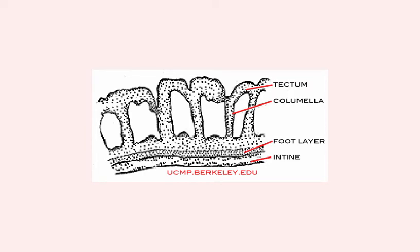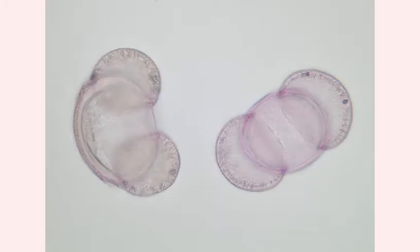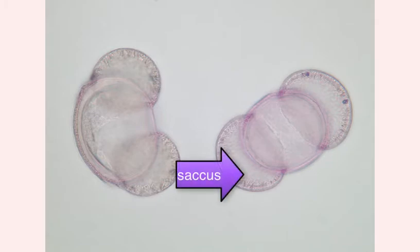The outer wall, ceiling, or roof — the tectum — is supported by columns, hence tectate-columellate. That large air chamber makes the pollen grain less dense and better suited for dispersal by wind. Gymnosperms, also wind-pollinated, have saccate pollen — their big airspaces hang off to the side of the microgametophyte. In other words, gymnosperm pollen is easily distinguishable from angiosperm pollen.